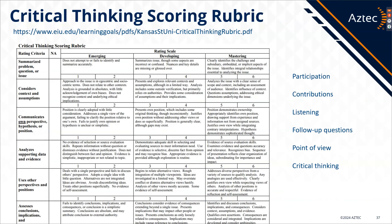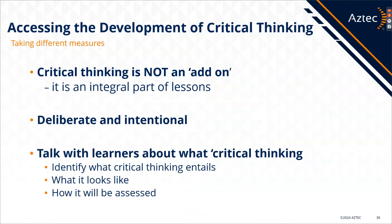This is a critical thinking scoring rubric. Look at all the things on the left: participation, contributions, listening, follow-up questions, point of view, and critical thinking — all built into this scoring rubric. You can see the characteristics of an emerging critical thinker through summarizing, developing, and those who have mastered. These are the criteria used to rate different responses. Searching 'critical thinking scoring rubric' will get you this — it's out of Kansas State.